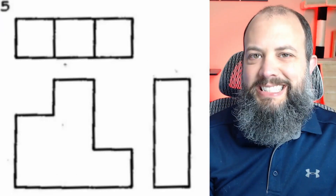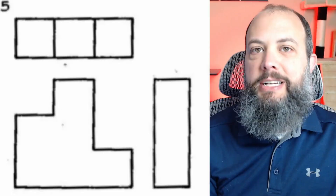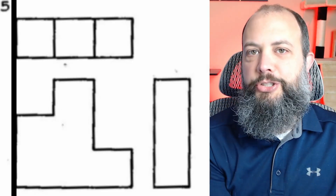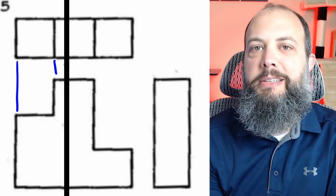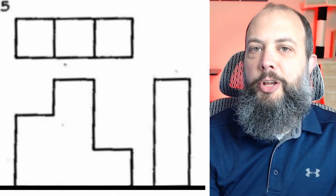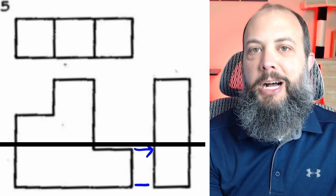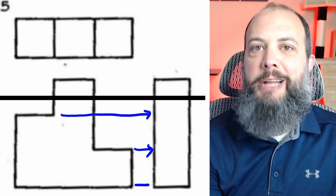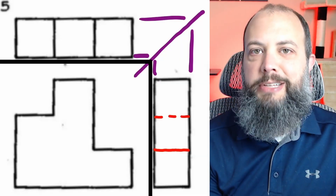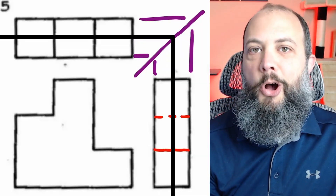Now we have a small step up in difficulty since the isometric view is no longer provided. My strategy for these drawings is always to compare front to top by sweeping left to right ensuring all features match, then compare front to right by sweeping from bottom up, and lastly compare top to right across the miter line by sweeping diagonally to ensure all features match from the top view to the right view.